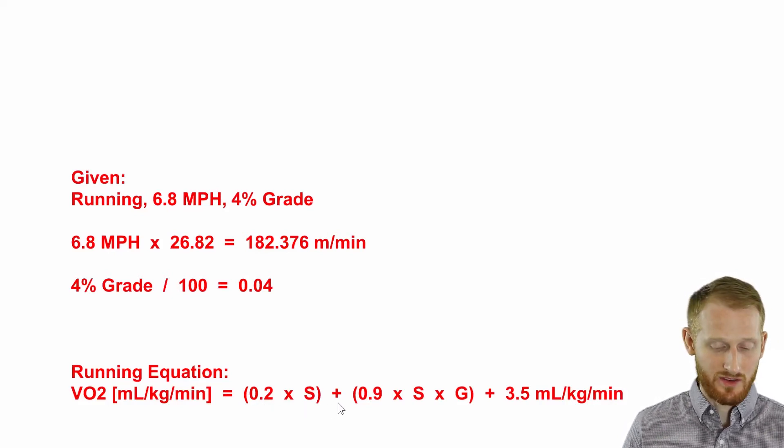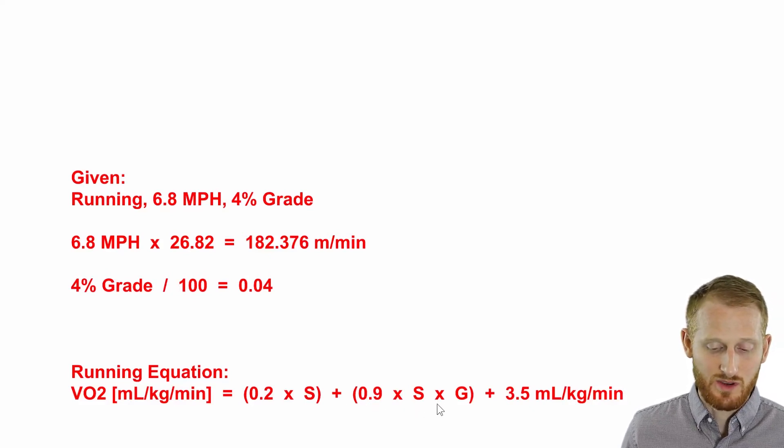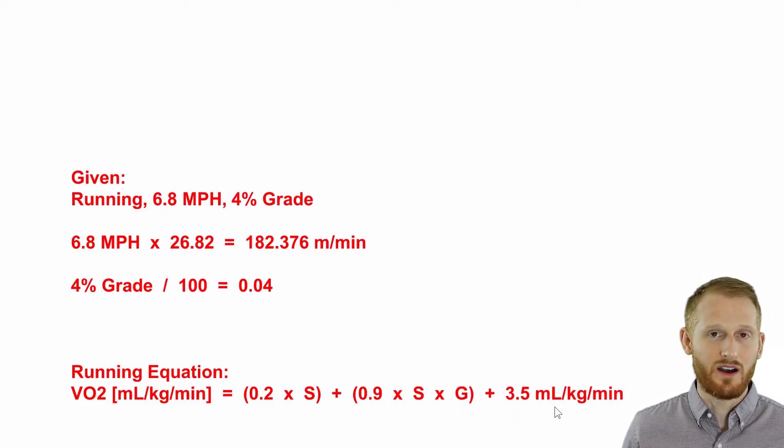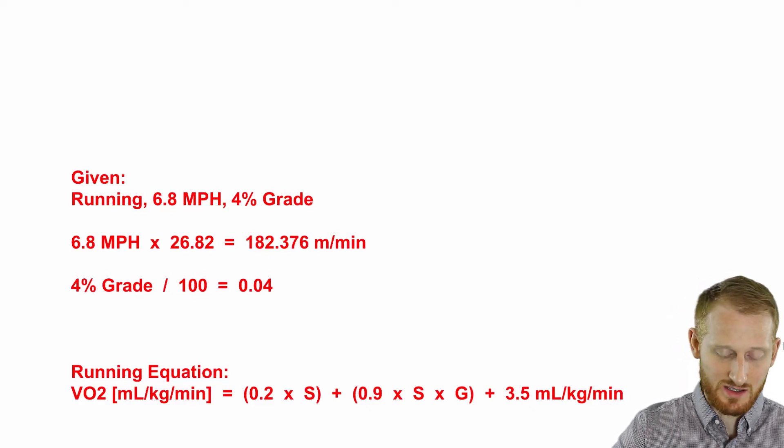plus, in parentheses again, 0.9 times the speed times the grade, in parentheses, plus 3.5. So a fairly long equation here, but for calculating oxygen consumption, this is still pretty easy to do.